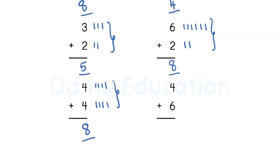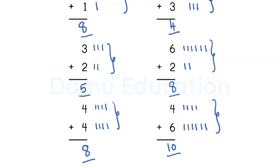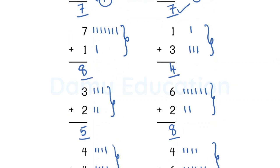For four plus six: draw four lines — one, two, three, four — then draw six lines — one, two, three, four, five, six. Count all combined: one, two, three, four, five, six, seven, eight, nine, ten. So the answer is ten. This is the way to do addition. Thanks for watching.